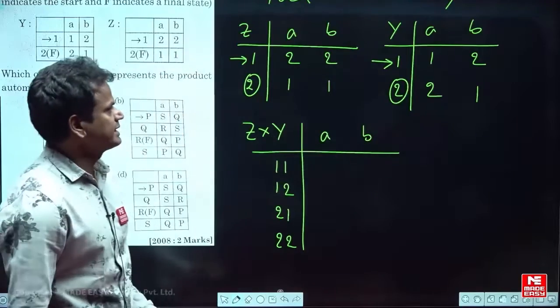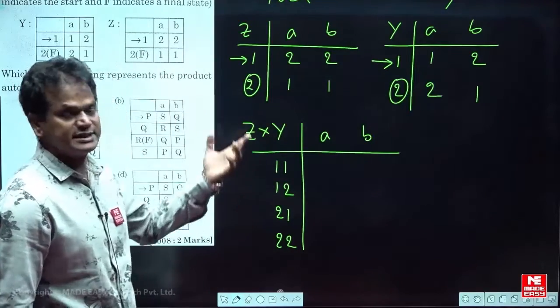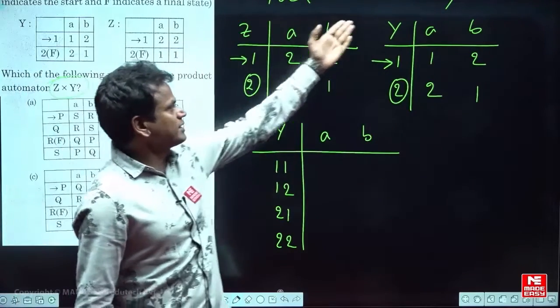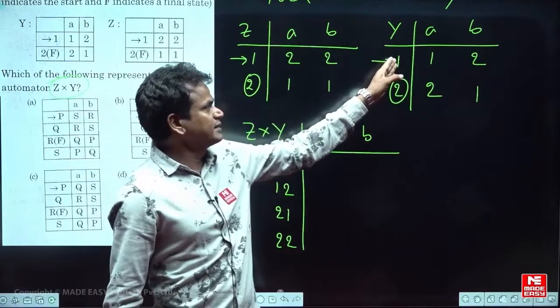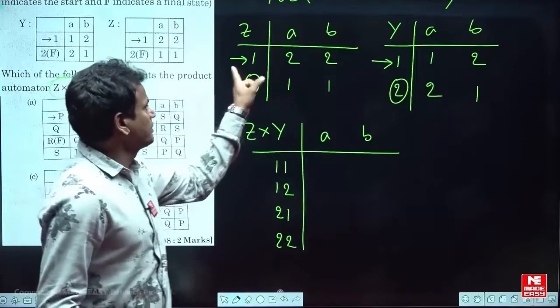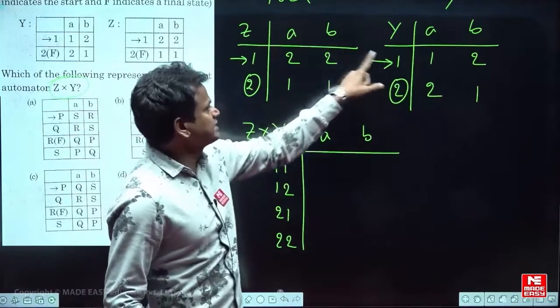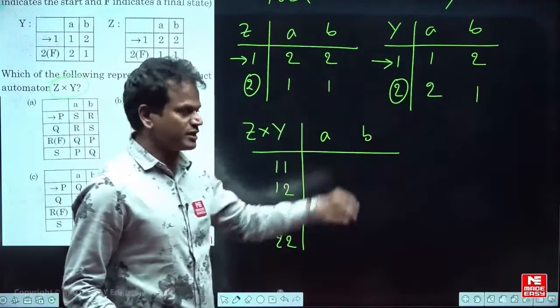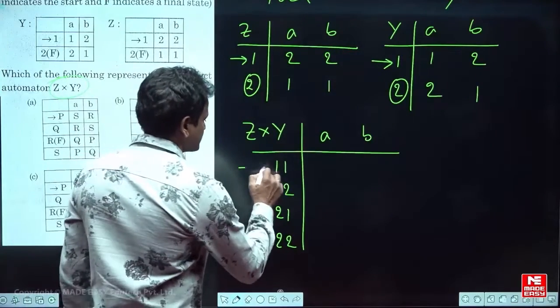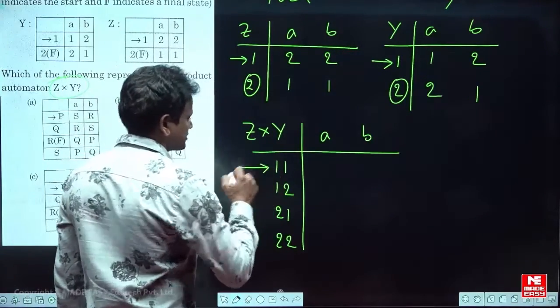What are the initial states? The initial state in Z is 1, and the initial state in Y is 1. So the combination of these two initial states gives us 1,1. So 1,1 will be the initial state in Z cross Y.